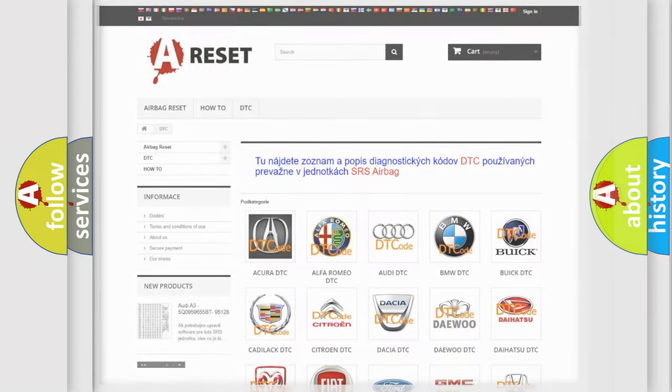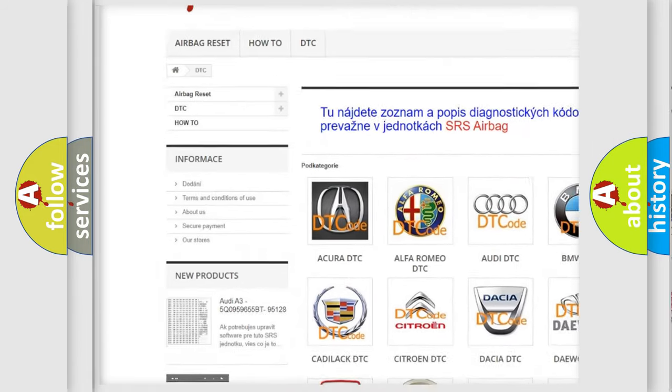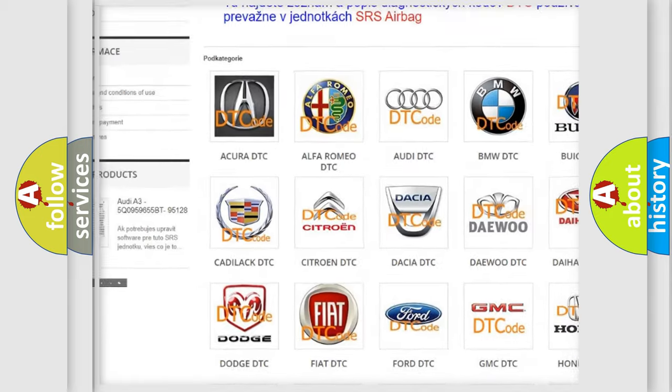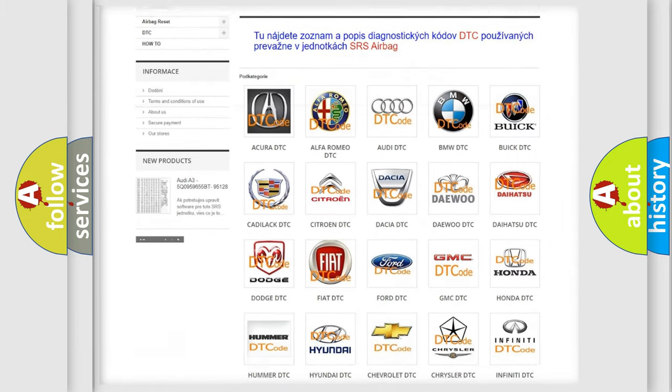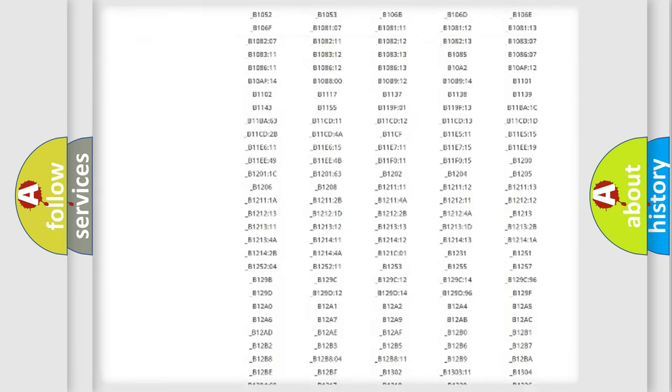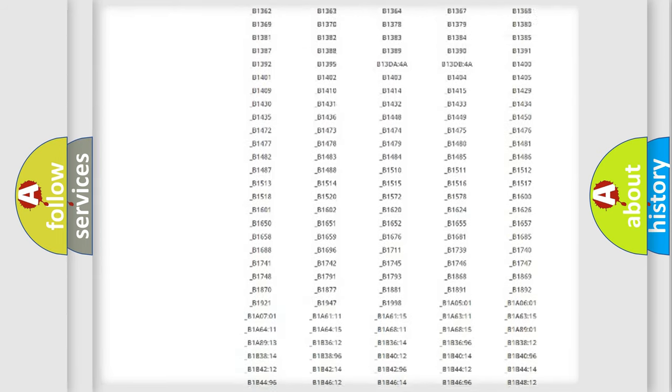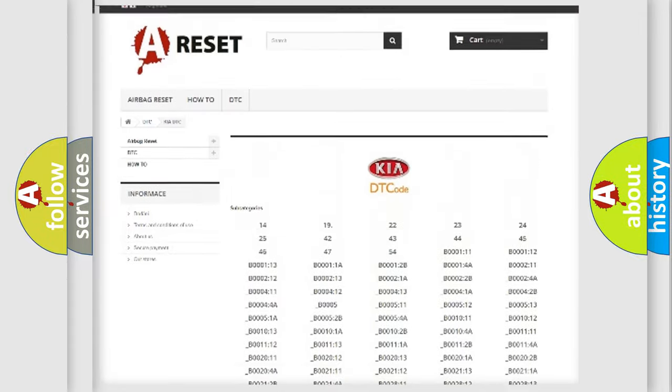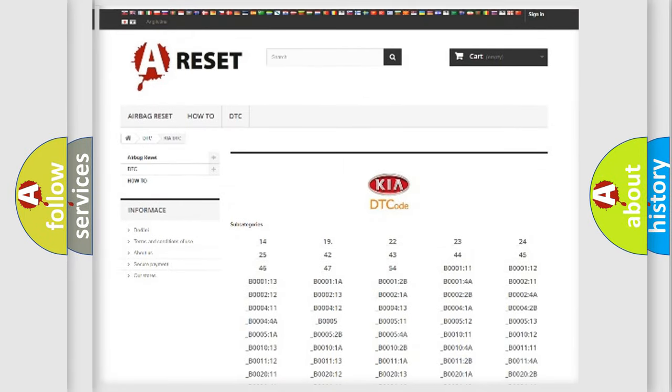Our website airbagreset.sk produces useful videos for you. You do not have to go through the OBD2 protocol anymore to know how to troubleshoot any car breakdown. You will find all the diagnostic codes that can be diagnosed in KIA vehicles, and many other useful things.